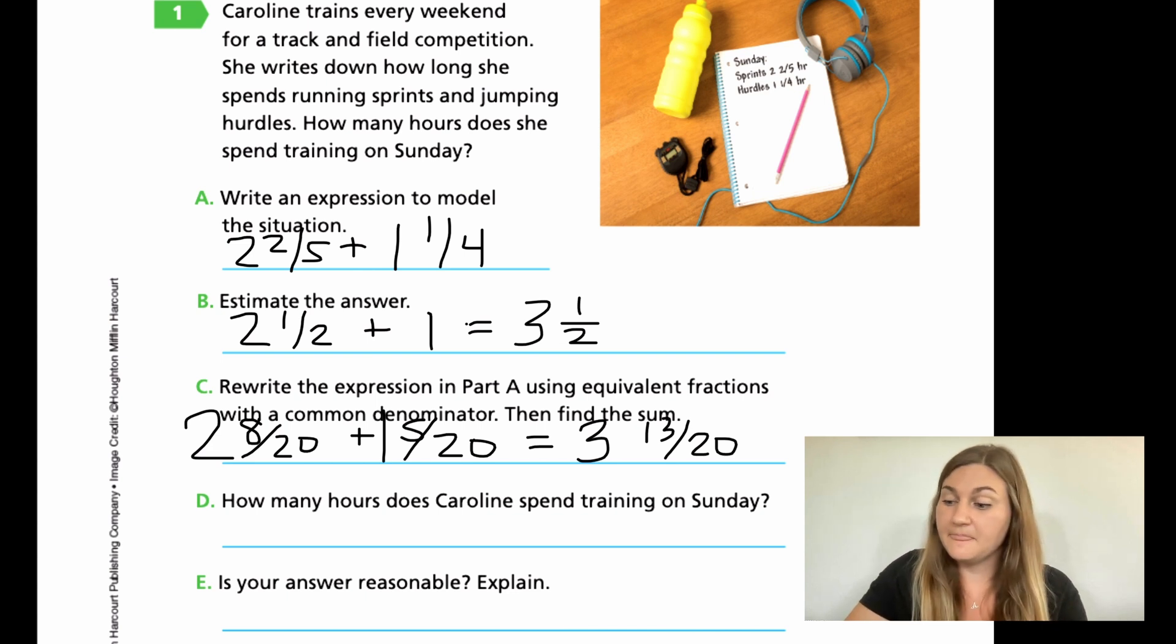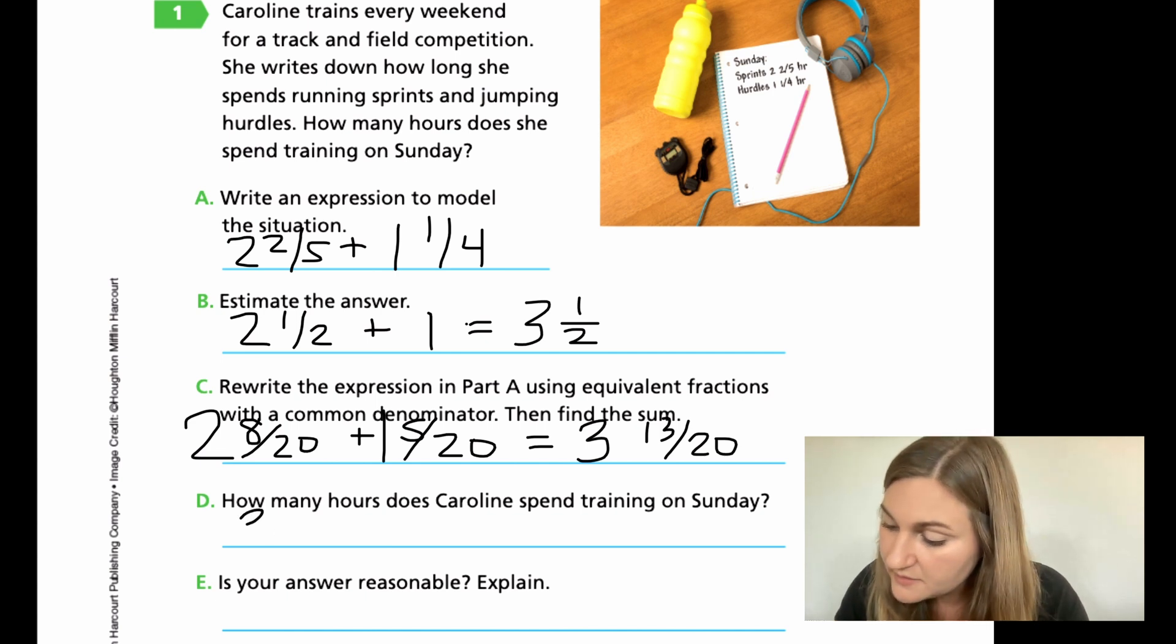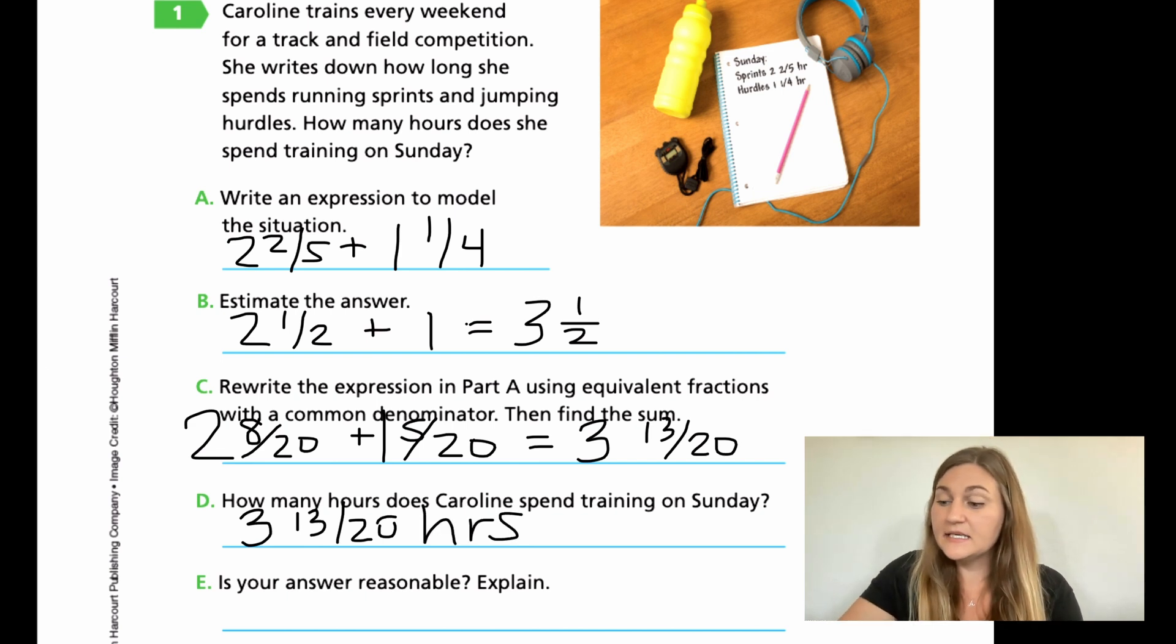Let's move on to D. How many hours does Caroline spend training on a Sunday? We just found out the answer. That's going to be 3 and 13/20. But now we're putting the unit, which was hours.